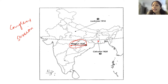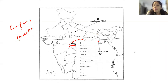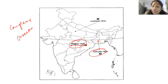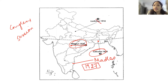Next, they will mark here and ask you to identify the place where the Congress session of 1920 was held. This is West Bengal, and here we have Calcutta — you need to learn the word Calcutta. Then we have Madras, where the Congress session was held in the year 1927.